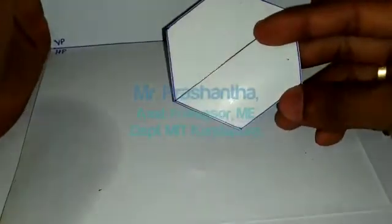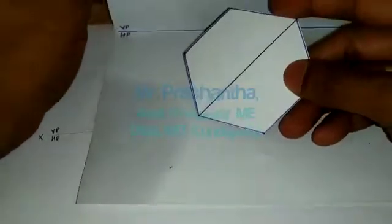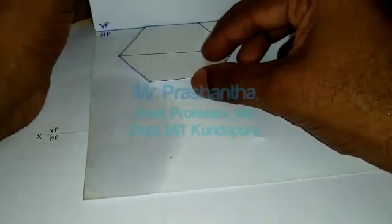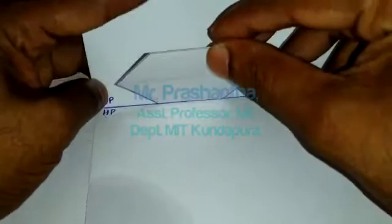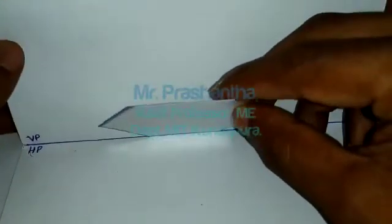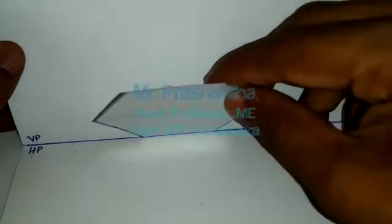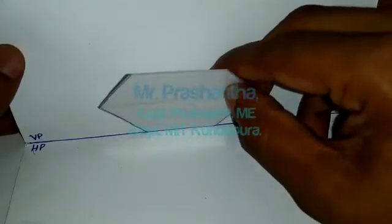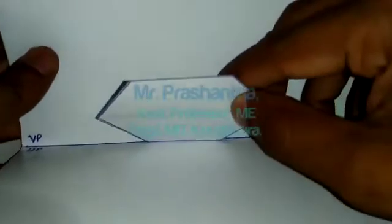Here, if this is a hexagon of 30 mm sides, your condition given is one of the side touches both HP and VP. That means it touches XY line like this. And the lamina makes 60 degree with HP. This is the condition given. It touches both the reference planes, HP and VP, and it makes 60 degree with HP.